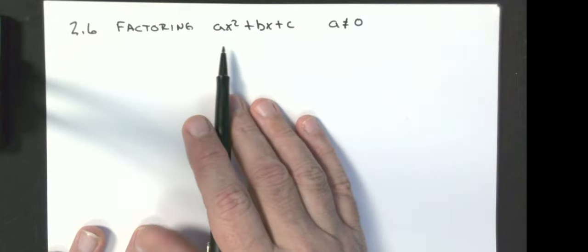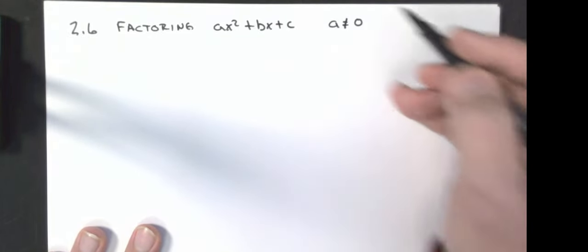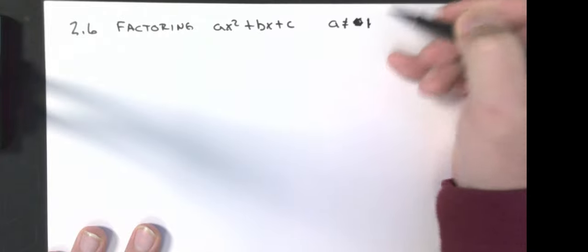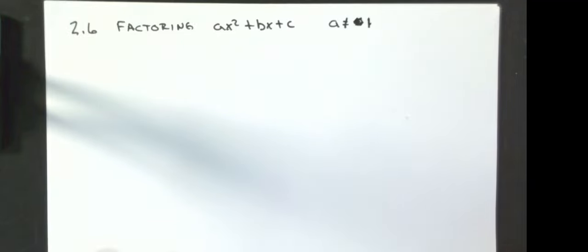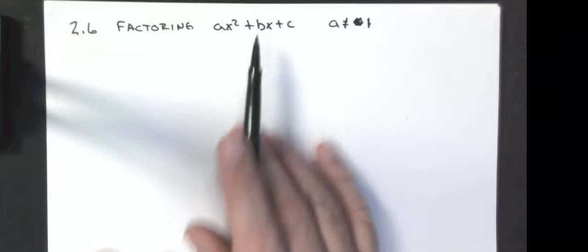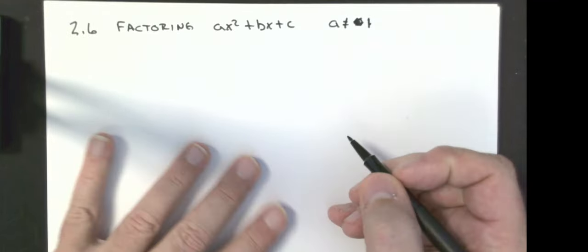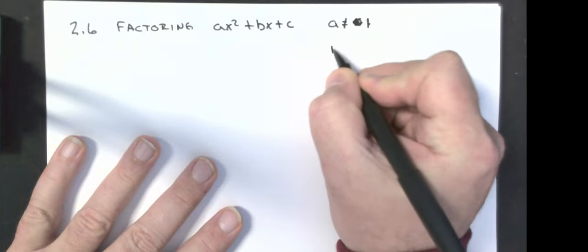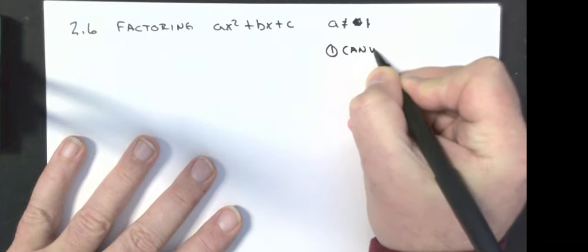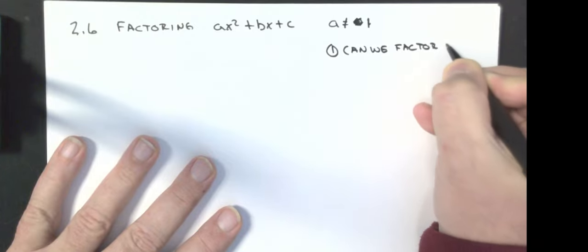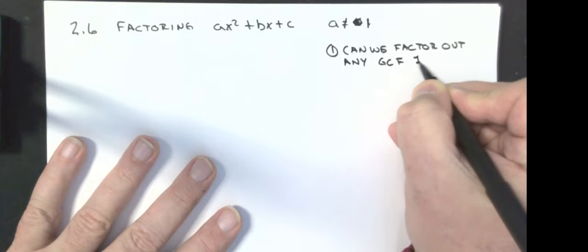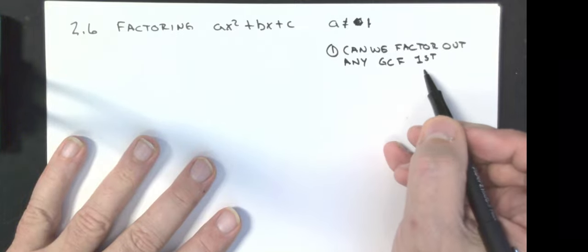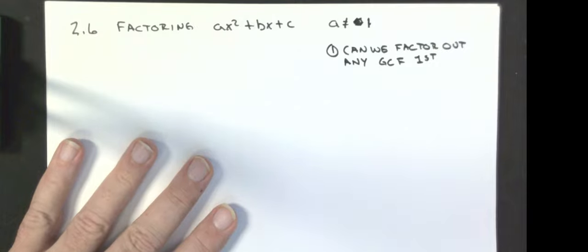Our next section is section 2.6 — factoring quadratics where the leading coefficient is not equal to 1. So unlike the last lesson where we just had a blank x squared, this lesson we are going to have numbers in front of the x squared when we start. The first thing we want to look at is: can we factor out any greatest common factor first? And once you do that, does it turn it into one of the previous types of problems?